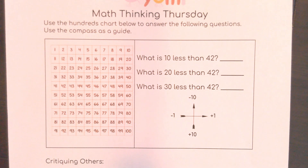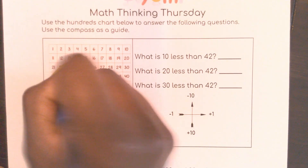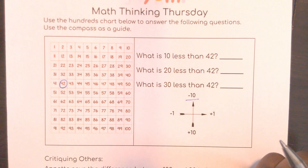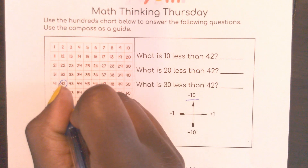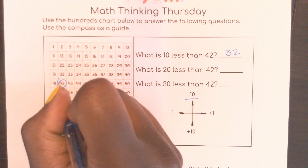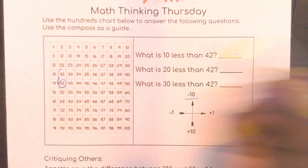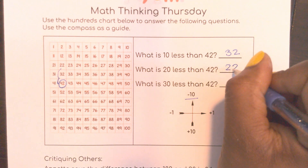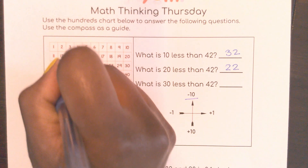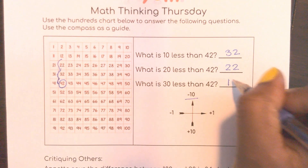Starting with 42: 10 less than 42 — going up on the hundreds chart — would be 32. 20 less would be 22. And 30 less would be 12.